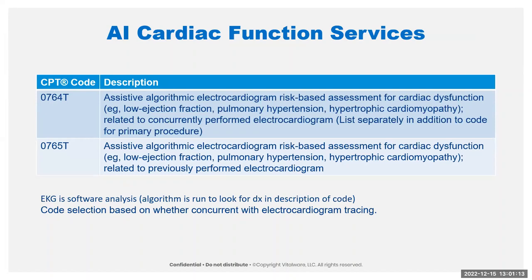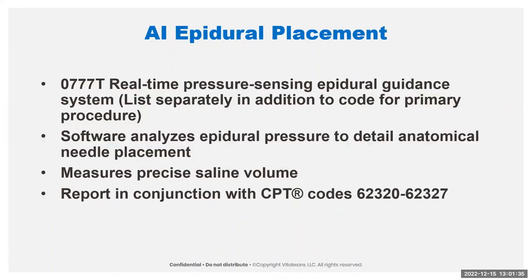There are new AI cardiac functioning services codes where AI uses an EKG, whether separately obtained or done at the same time, to help the physician look at some of those things and point out where there might be some differences. There's a new code for a device that helps read the pressure for epidural guidance, so you can find the optimal spot to put in the epidural. These should be reported in conjunction with the 62320 through 62327. There are also new codes for virtual reality mediated therapy, which can be done to help with social communication. It's considered a practice expense and coded once per therapy session — watch the parenthetical notes because they tell you what to report it with or not.